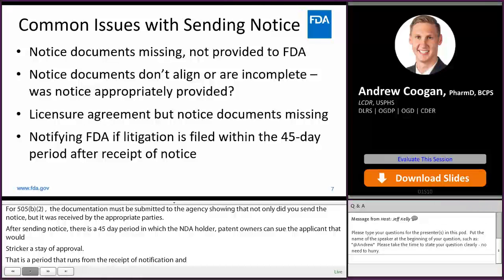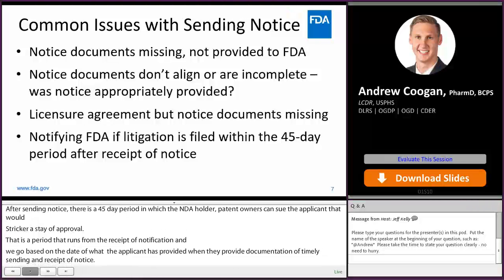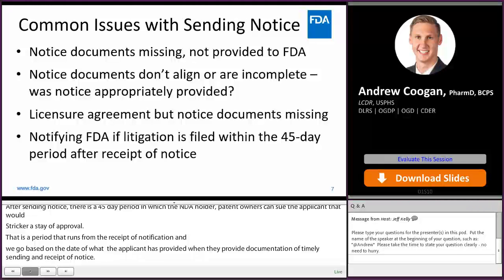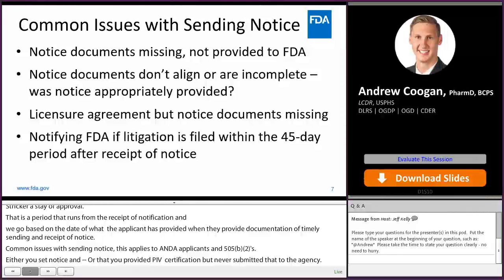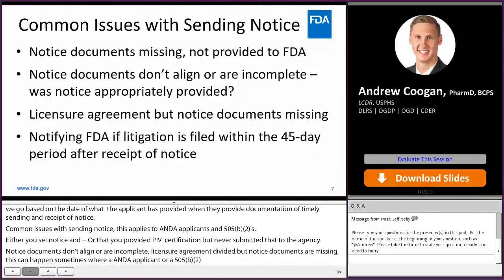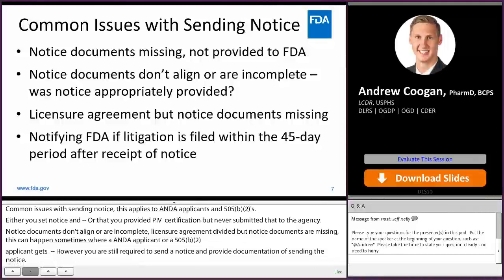Some common issues with sending notice: notice documentation could be missing or not provided to the agency — either you sent notice but never notified FDA by providing documentation, or you provided a paragraph 4 certification but never submitted notice. Notice documents may not align or may be incomplete. A licensure agreement may be provided but notice documents are missing — even with a licensure agreement, you are still required to send notice and provide documentation. Applicants must also notify FDA if litigation is filed within the 45-day period, and also if the 45-day period expires without a suit on their paragraph 4 certification.